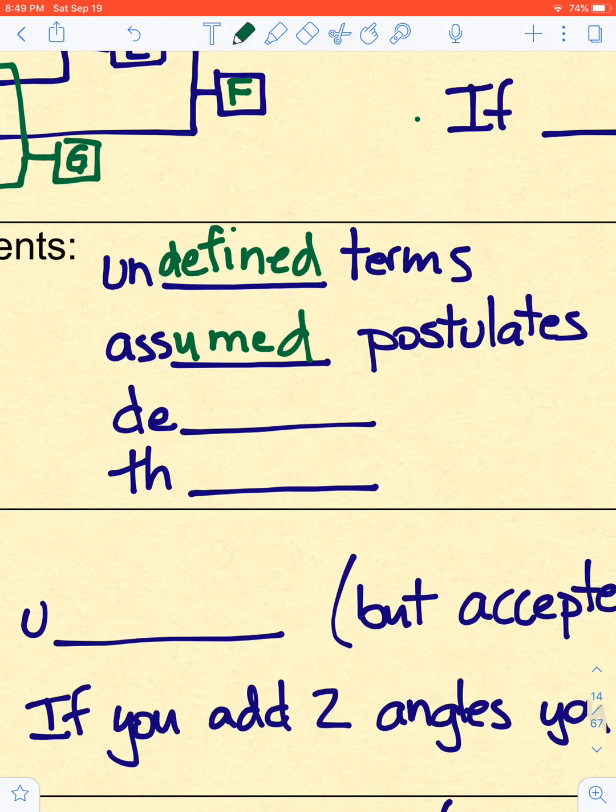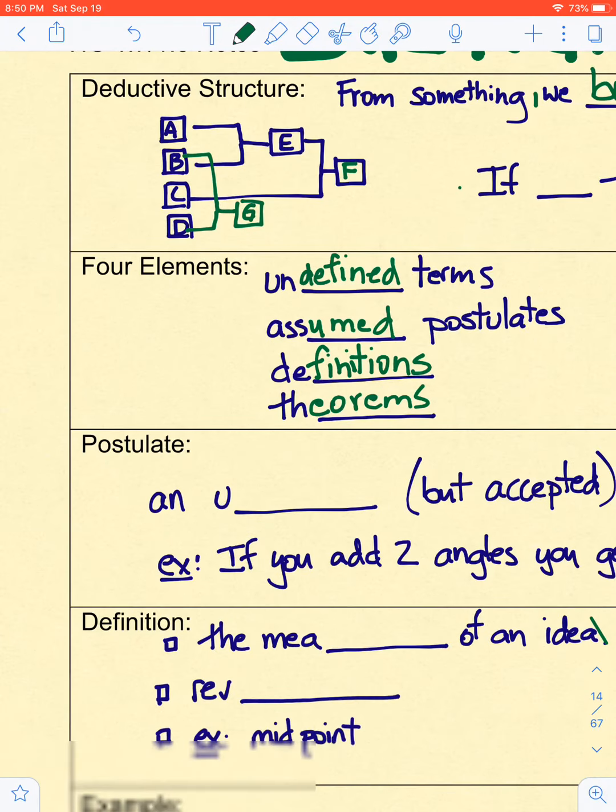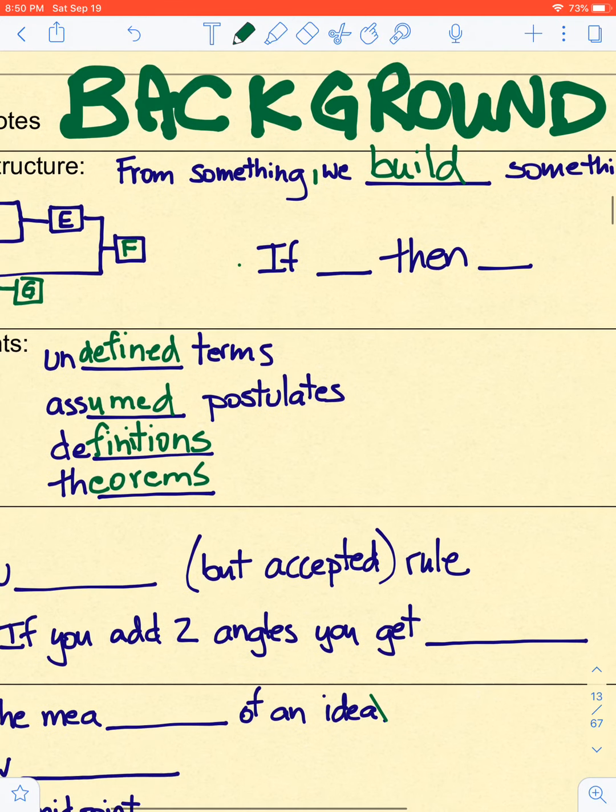So then we build things. Definitions. And finally, we have theorems and I'll talk about each of these more specifically as we move forward. One last thing about deductive structure is that the basis idea is that if P is true, that's something, then Q is true from that. Sometimes the P is more than one thing, but kind of like I drew in that little diagram, you'll see examples of that today.